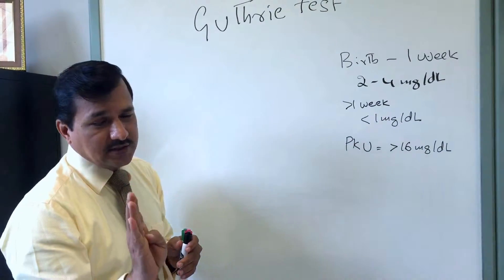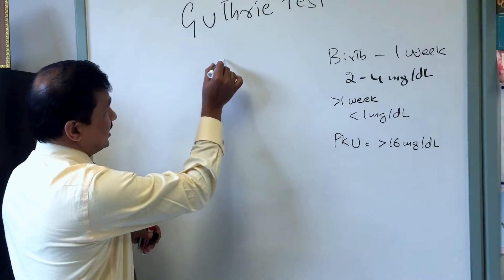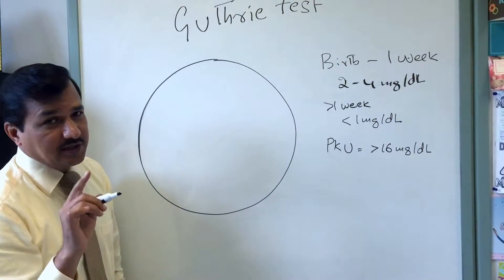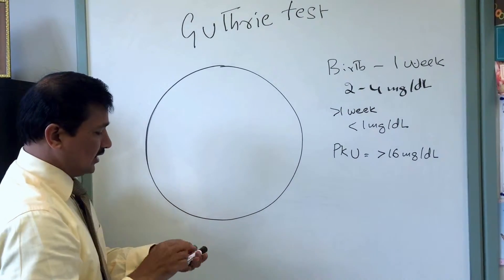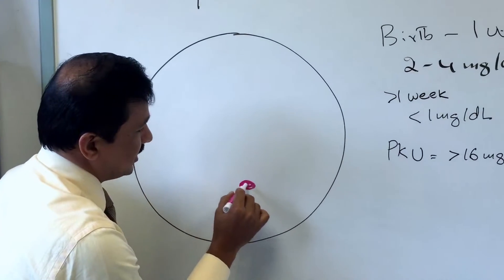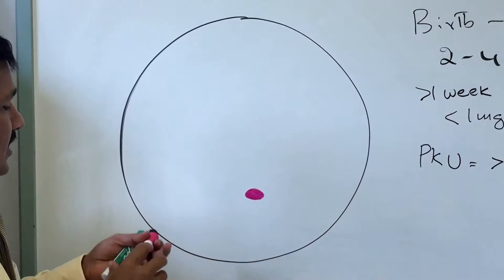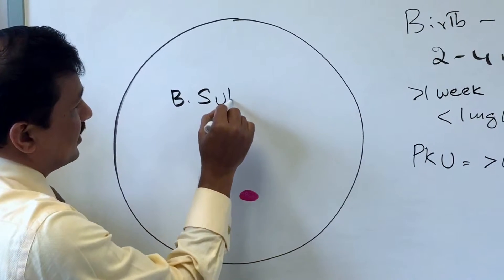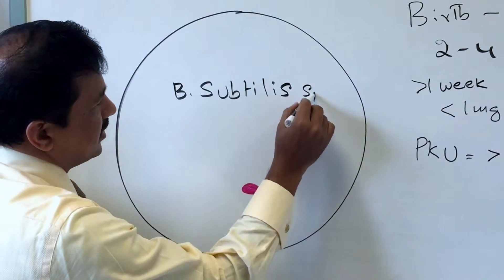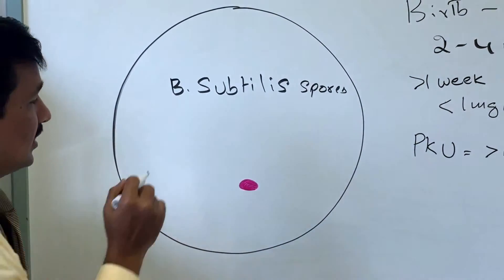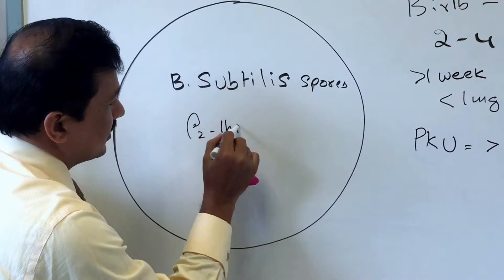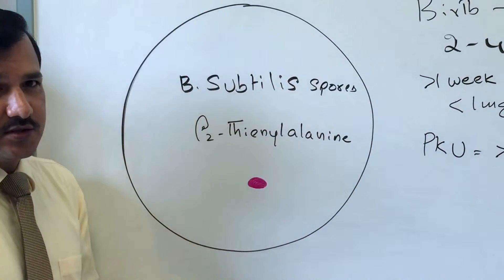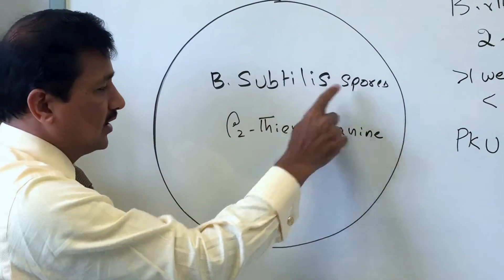The blood sample is taken by heel prick on a filter paper and sent to the laboratory. In the lab, that blood spot is placed on a petri dish containing agar media. Into this agar media, spores of Bacillus subtilis are added, along with a chemical called beta-2-thienylalanine.